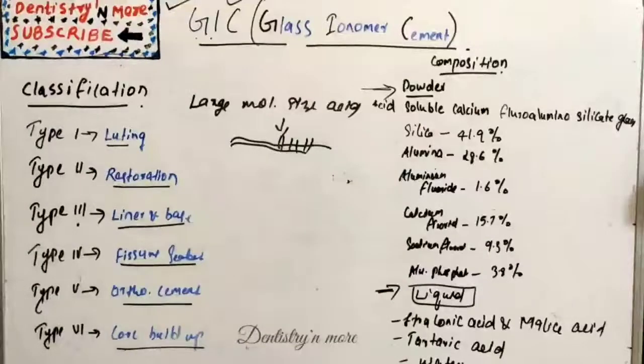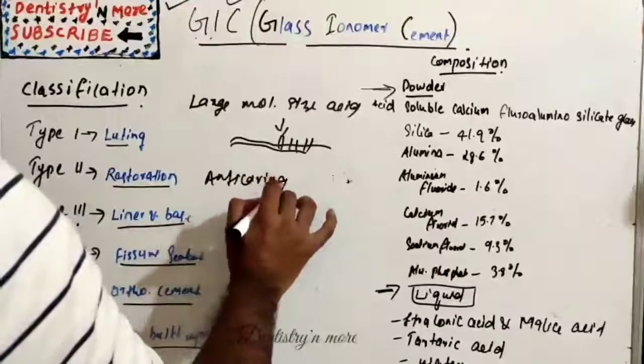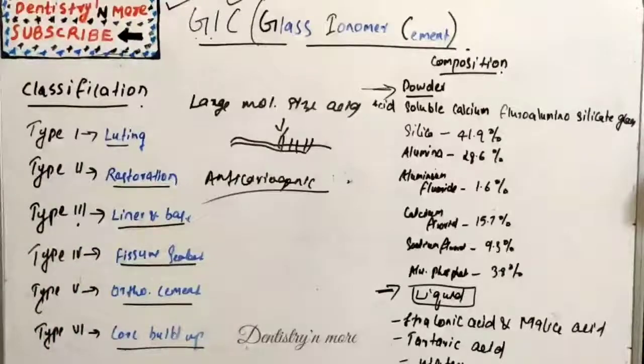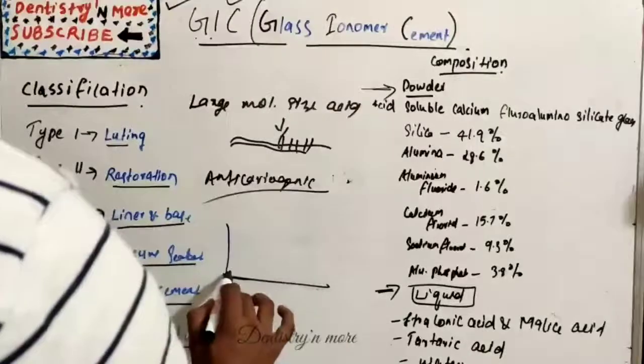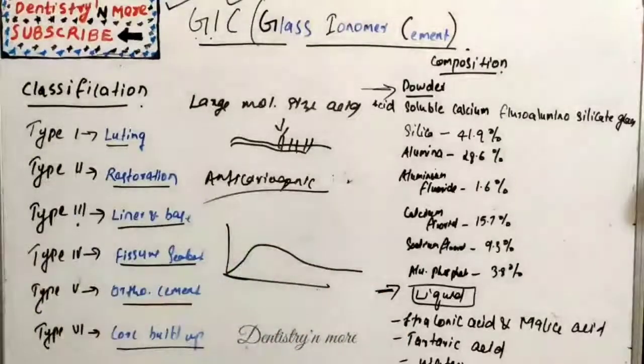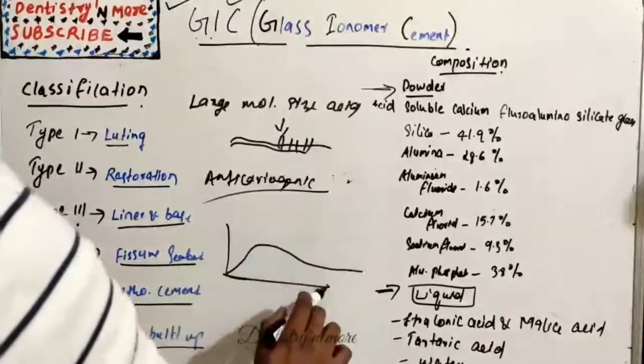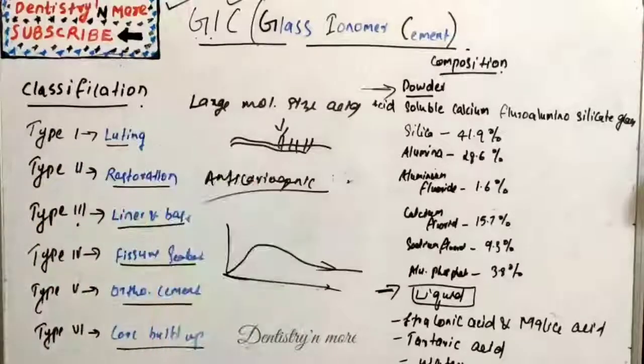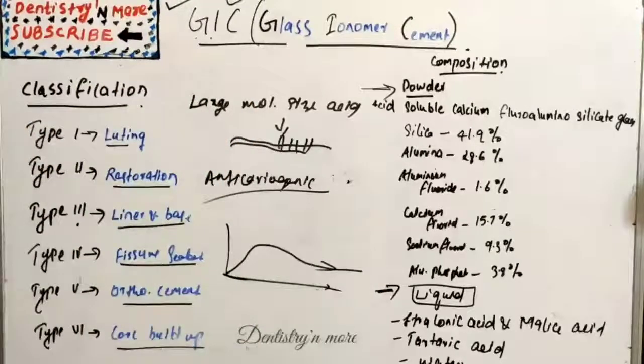The anti-cariogenic properties: this is the most important one because of its fluoride release. Initially it has got a large amount of fluoride release, but later it will be reduced. If we take the fluoride release, it is like this: there is an initial exponential phase where high amount of fluoride is released, then it goes into a flat phase. But the thing is, when we apply sodium fluoride or any other type of fluoride, this GIC will take up the fluoride ions and it acts as a reservoir.